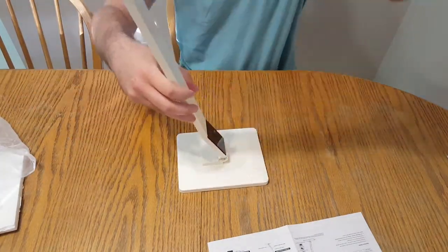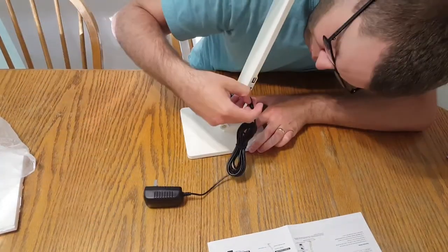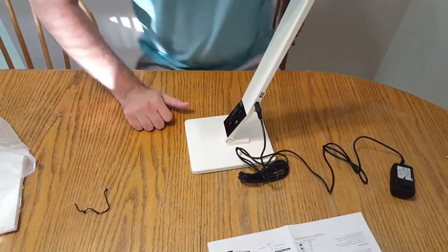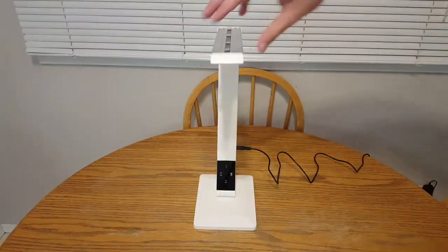The base is nice and heavy to help keep the lamp from moving, and then above the power cord port is the USB charging port that you can use to charge your devices.